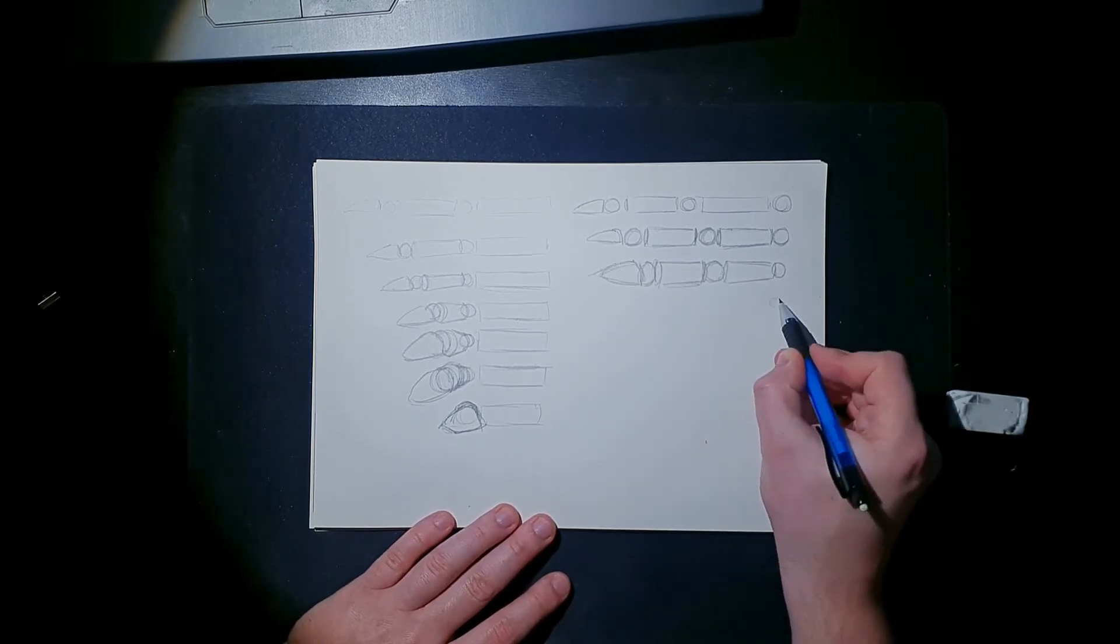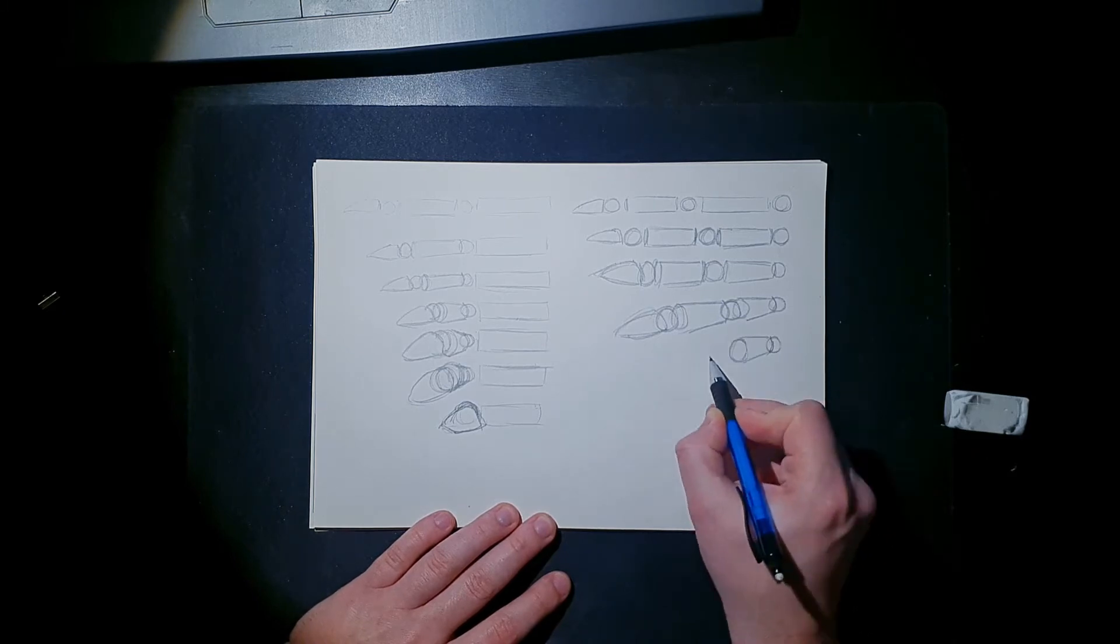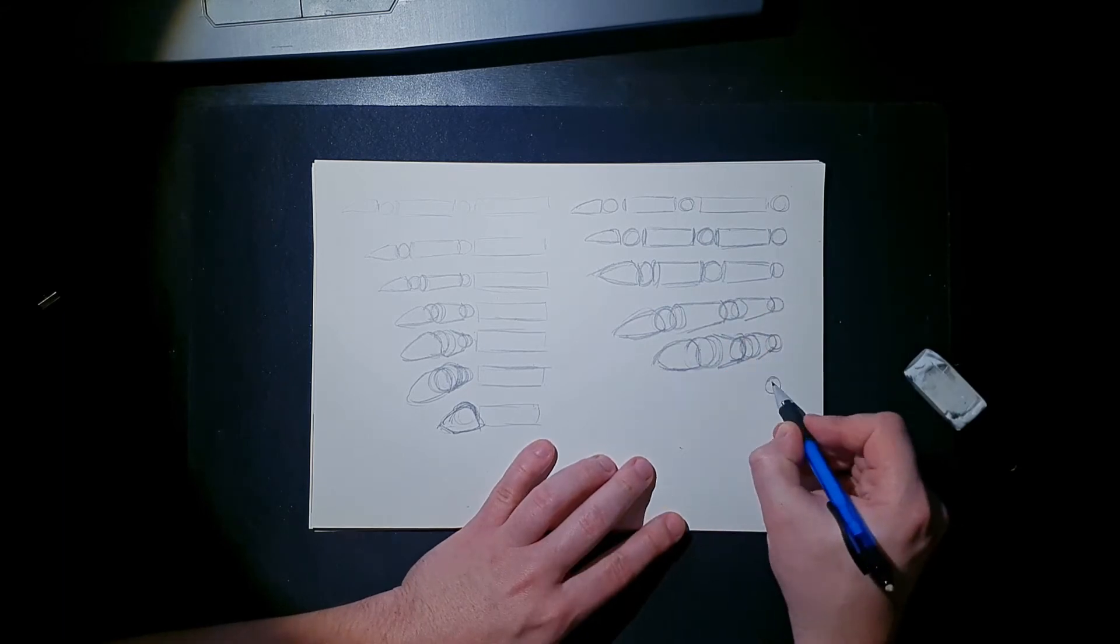The easiest way I could describe it is that foreshortening describes the dependency of growth and shrinkage to the distance of the observer, but applied to the object itself. Sounds complicated, but it's not.